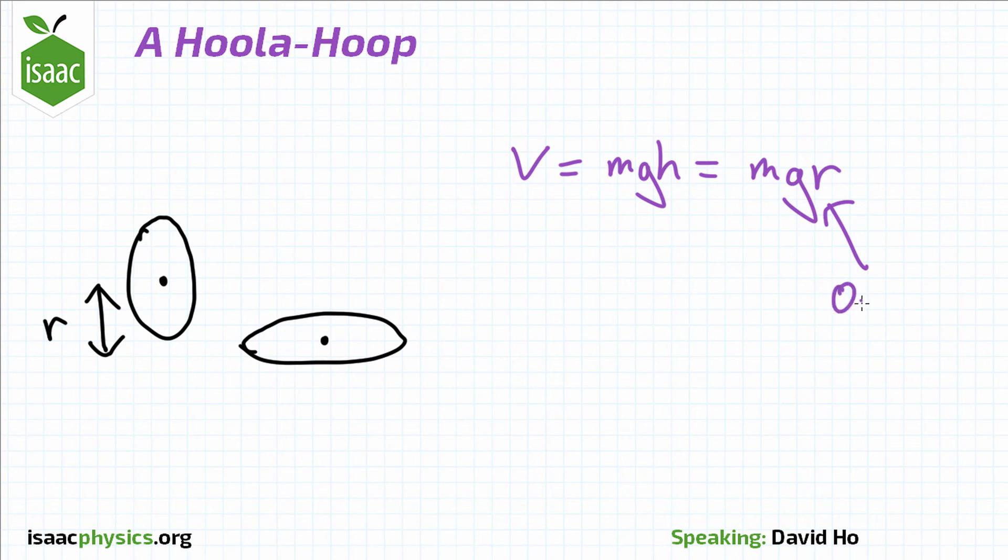We know that r is 0.6 metres, and using our knowledge of the mass of the hoop and the acceleration due to gravity, we can work out the result.